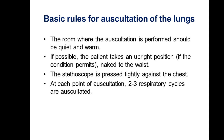There are basic rules for auscultation of lungs. A room where the auscultation is performed should be quiet and warm. If possible, the patient takes an upright position if the condition permits. From neck to waist, the stethoscope is pressed tightly against the chest, and at each point of auscultation, two to three respiratory cycles are auscultated.